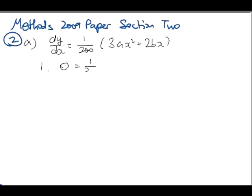0 equals 1 on 200. Now, at x equals 2, you get sub in x as 2, you get 8a, plus 4b, plus c. There's your first equation. Easy, isn't it? On to the second one.